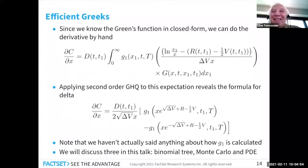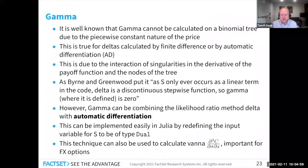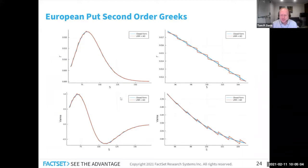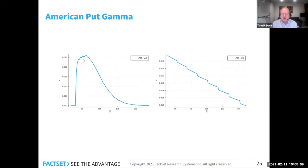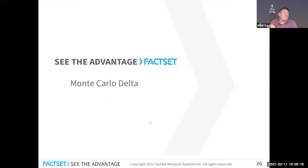Moving on to gamma: you can do it for Vanna as well, which is obviously important for FX. It's not totally differentiable, but it looks like what gamma should look like for an American put. Looking at the time, the speaker is told he has until 10:30.